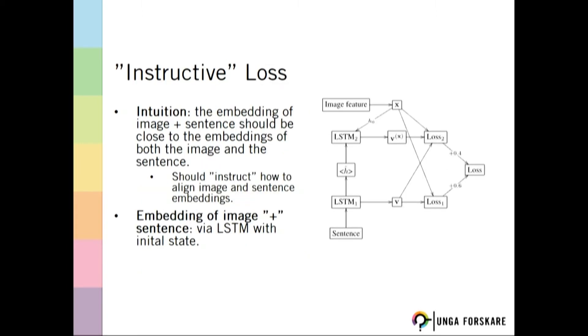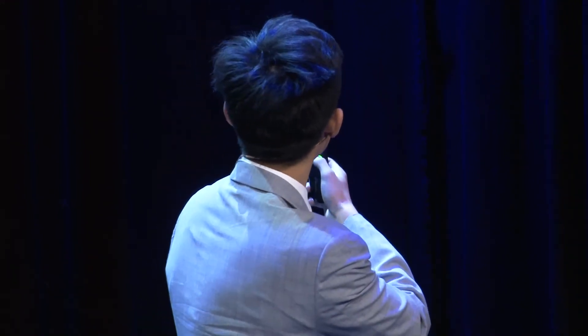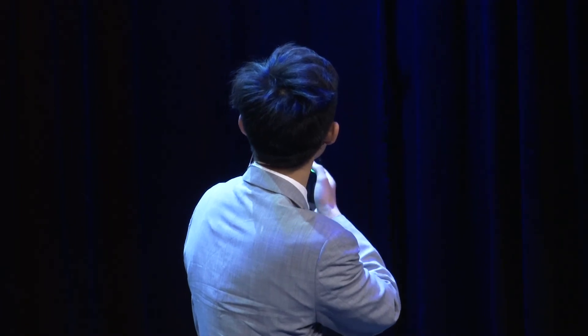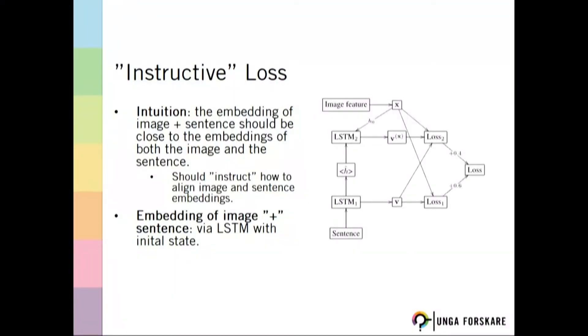To improve upon that, we have this idea of instructive loss, which means we create an embedding of image plus sentence. We feed in the embedding of the image and the sentence, and create another vector called XVX — the combination of the sentence and the image. If the image and sentence have aligned meanings, then their combination should also have aligned meanings with the sentence and the image. We designed another loss function called loss2, and use a weighted sum of these two loss functions as the new loss function we optimize.